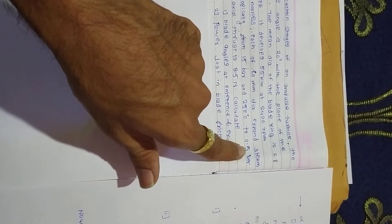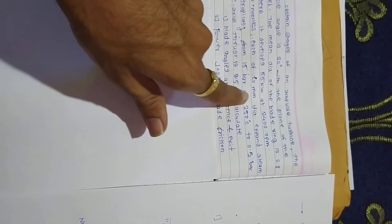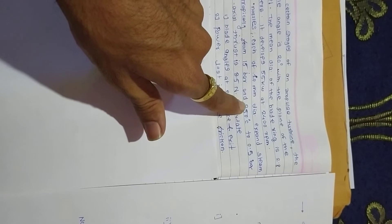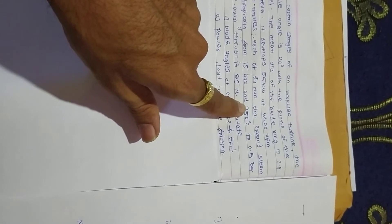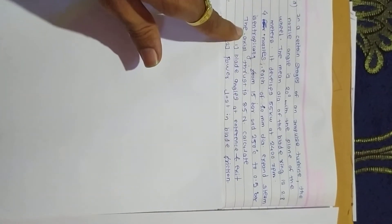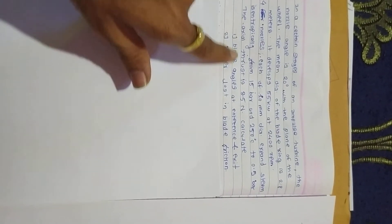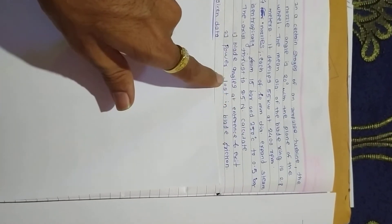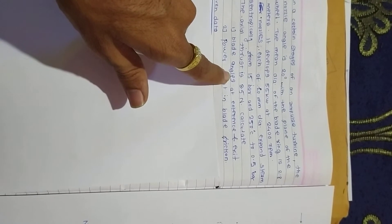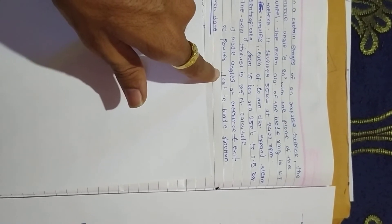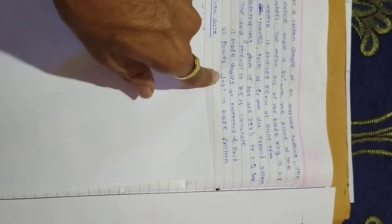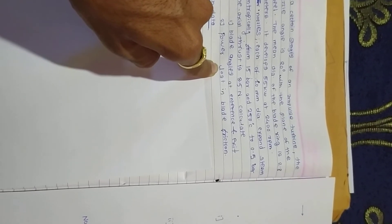The initial condition of steam is 250 degrees Celsius, so it must be superheated steam. They also give axial thrust as 3.5 Newtons. Calculate blade angles at entrance and exit, and power lost in blade friction.